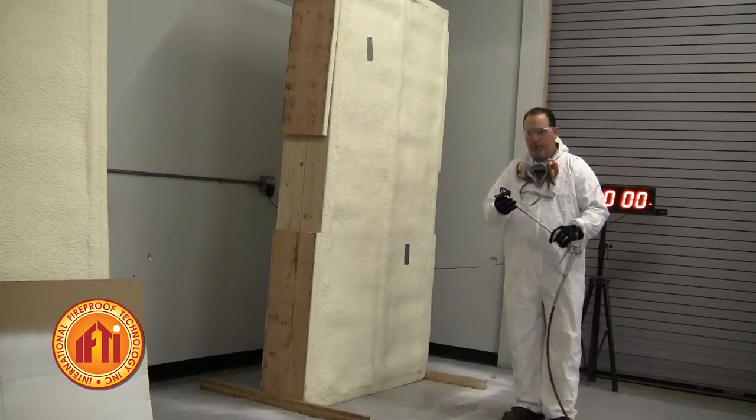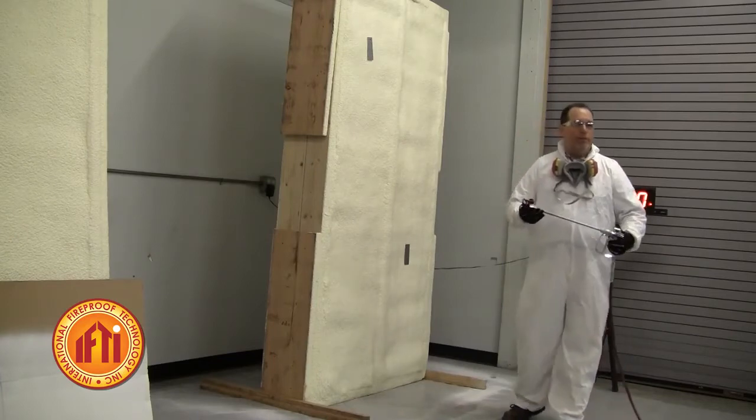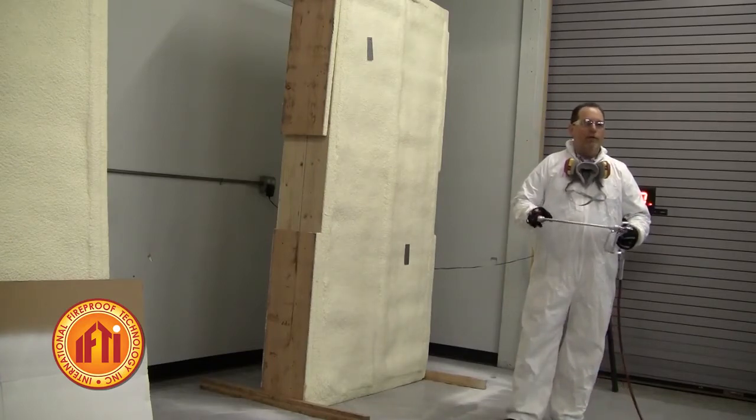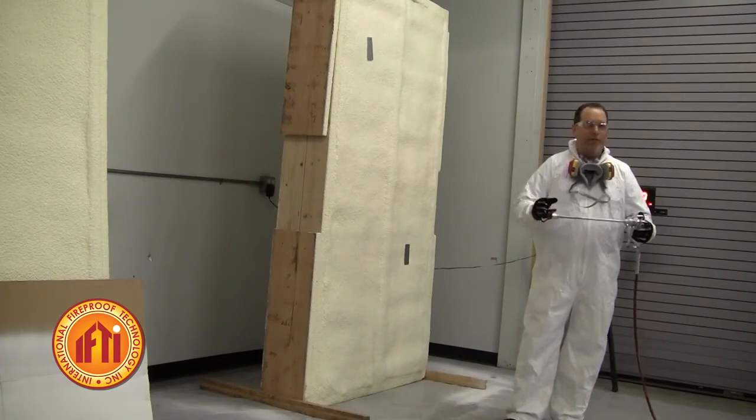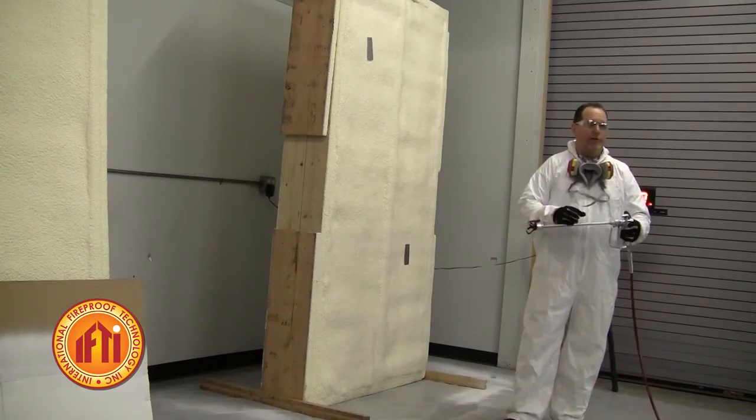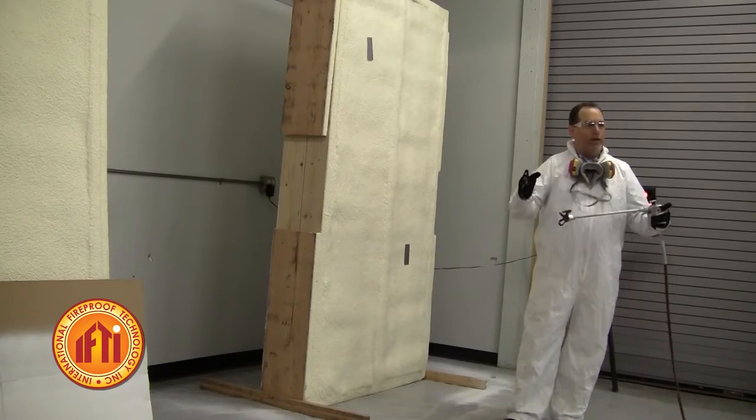Now, the tip we're going to use on this one is a 519, pretty much standard. The 5 stands for the width of the fan, which actually is double. It's 10 inches. So when you get a 5 series or a 4 series or a 3 series, you double that. That's going to be your fan width.